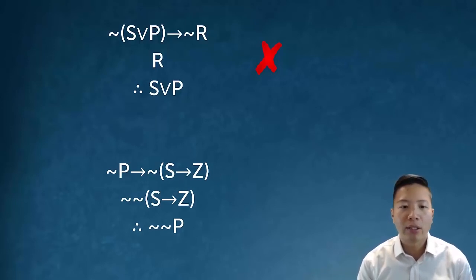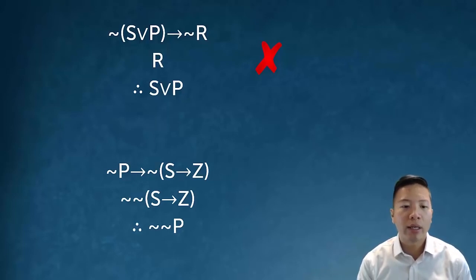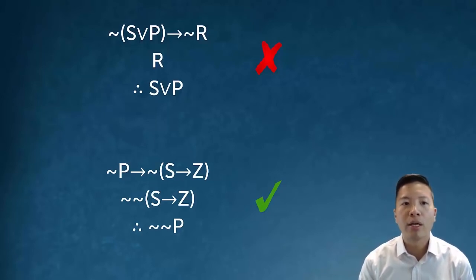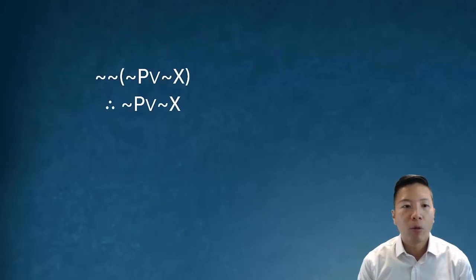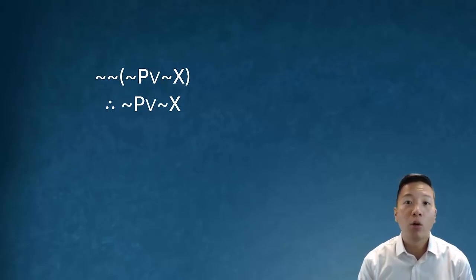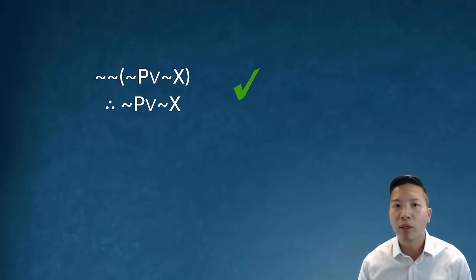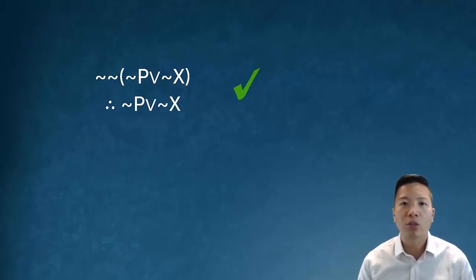Here's a final example: not p arrow not bracket s arrow z, and I have the double negation of s arrow z. Can I conclude not not p? Yes I can. This is the good version of modus tollens. What about: negation negation bracket not p or not x — can I conclude not p or not x? Surely I can. This is just a clean example of double negation. I have the double negation of some complicated molecular statement and I can just peel them away.